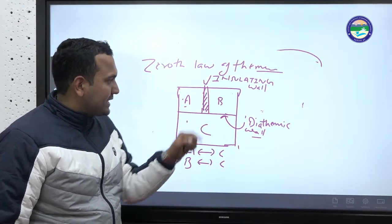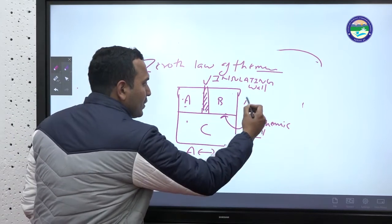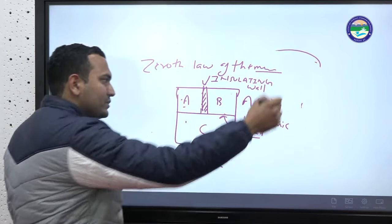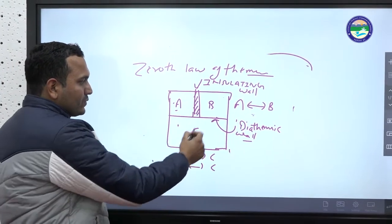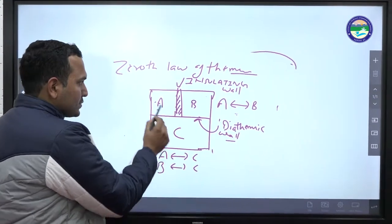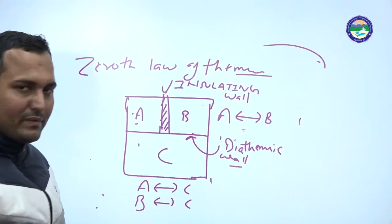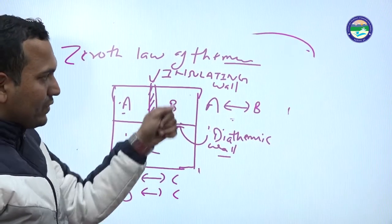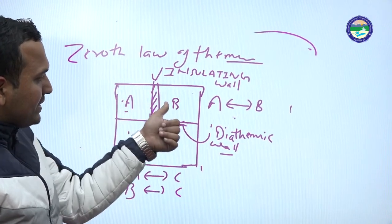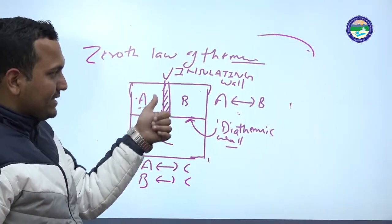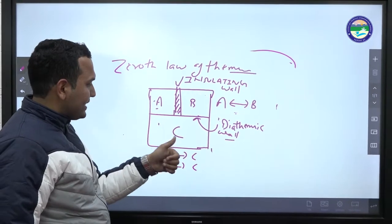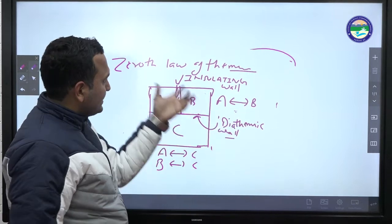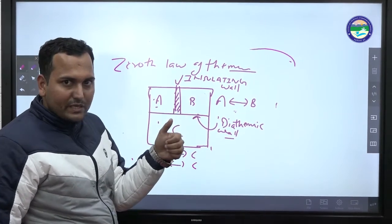The zeroth law of thermodynamics states that A and B will also be in thermal equilibrium. Even though A and B are separated by an insulating wall — so no direct heat transfer occurs between them — because both A and C are in thermal equilibrium and B and C are in thermal equilibrium, A and B are also in thermal equilibrium. This is the zeroth law of thermodynamics.